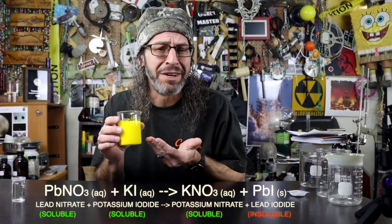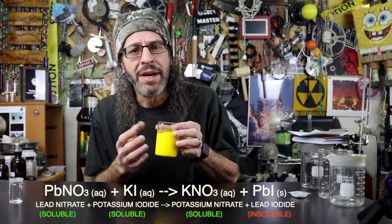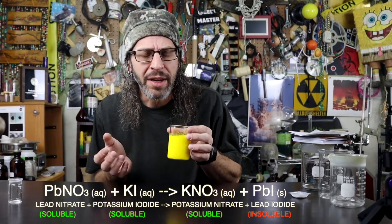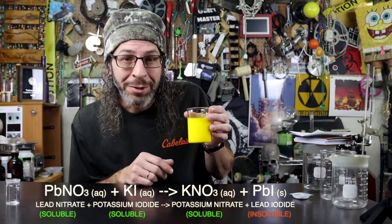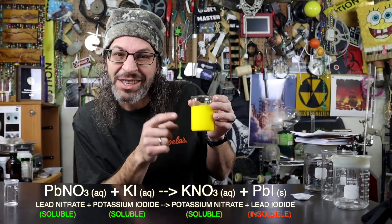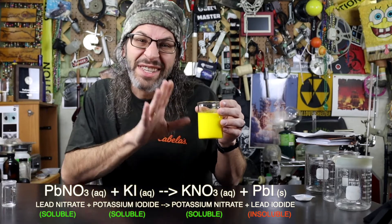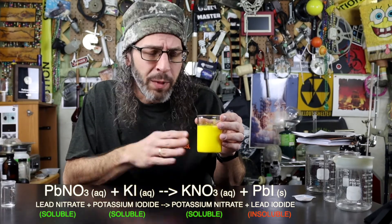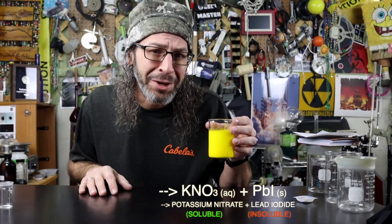So today we're trying to understand precipitation reactions — this is one of my favorites. This is lead nitrate and potassium iodide. These are two solutions that when you combine them together they make an insoluble solid. That's the yellow color that you're seeing — that yellow is actually a solid in the solution. We're going to let this one sit for a little while while we talk about precipitation reactions and we'll come back and look at it in a bit.